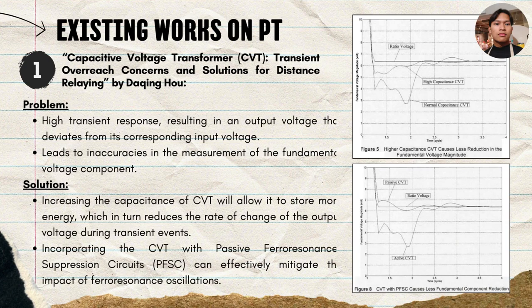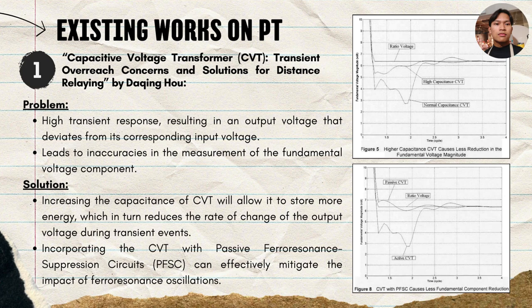Looking at existing works on potential transformers, the first research paper is about capacitive voltage transformers (CVT). The problem discussed is the high transient response which results in output voltage deviating from the input voltage. The solutions proposed are: first, increasing the capacitance of the CVT to store more energy and reduce the rate of change of output voltage during transient events — as shown in the first graph, the CVT with high capacitance has a lower transient response. Second, incorporating the CVT with passive ferro-resonance suppression circuits, which can effectively mitigate the impact of ferro-resonance oscillations — as seen in the second graph, the CVT using the passive circuit has a lower transient response compared to one using an active circuit.